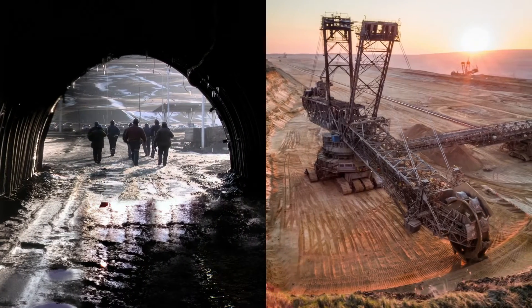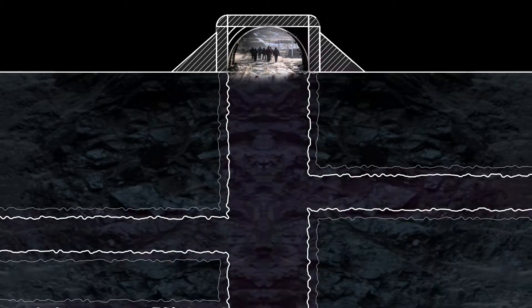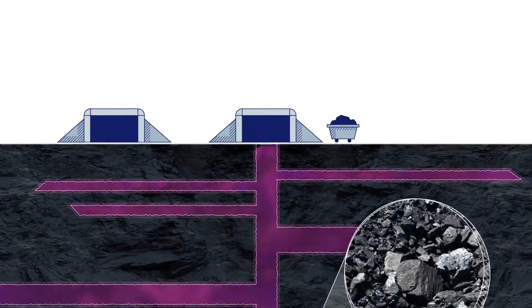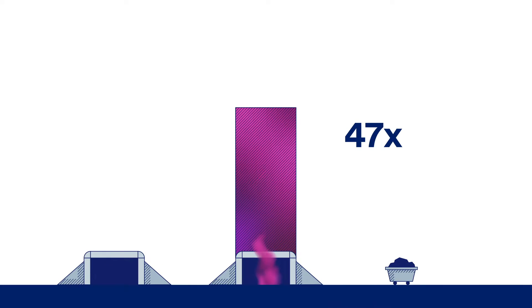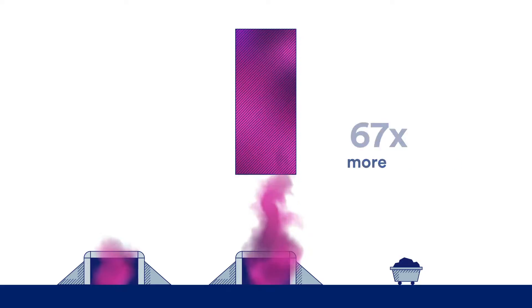While both underground and surface mines emit methane during production, underground mines typically emit more methane due to the depth and type of coal. Some of the world's gasiest mines can emit 67 times more methane than other mines with similar productivity regardless of size.